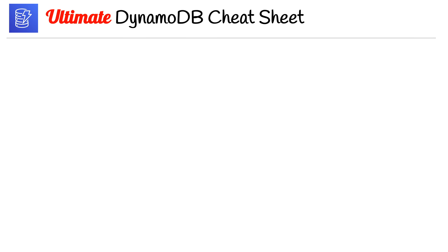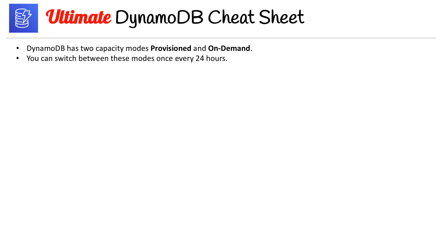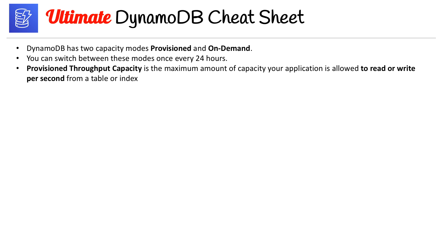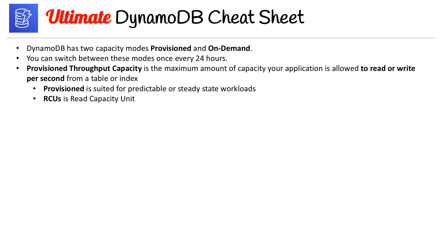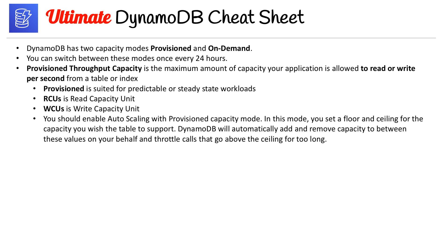On page five of seven: DynamoDB has two capacity modes — provisioned and on-demand. You can switch between these modes once every 24 hours. Provisioned throughput capacity is the maximum amount of capacity your application is allowed to read or write per second from a table or index. Provisioned mode is suited for predictable or steady-state workloads. It's important to understand RCUs (Read Capacity Units) and WCUs (Write Capacity Units). With provisioned throughput, it's recommended you enable auto scaling, setting a floor and a ceiling for capacity.